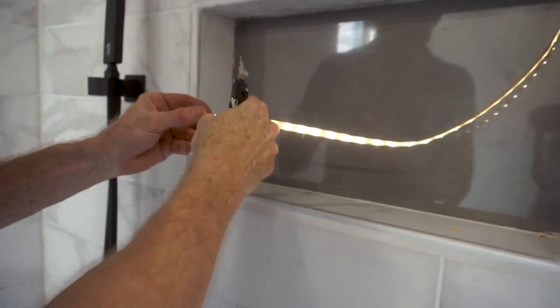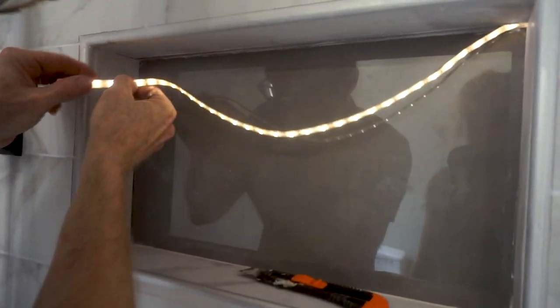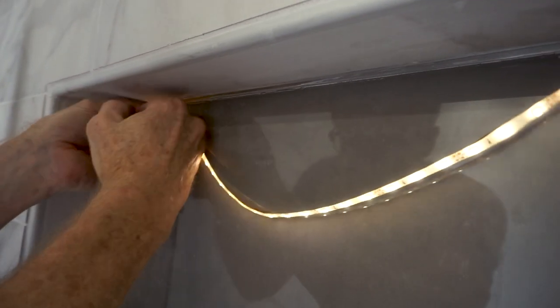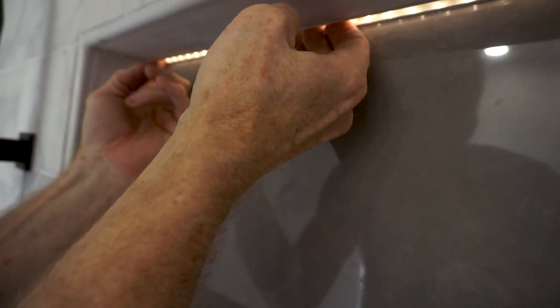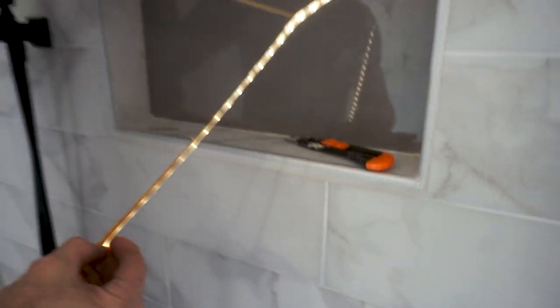Then I'll cut the LED strip to length on one of the marks where it indicates you can cut the strip. It was a little too long so I cut it at the next increment. I'll test the fit and then remove the paper that covers the adhesive backing and carefully stick it onto the aluminum C channel.